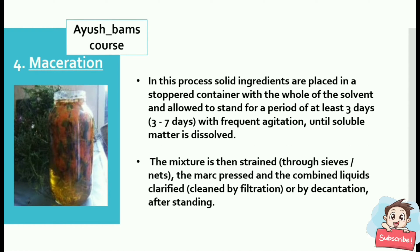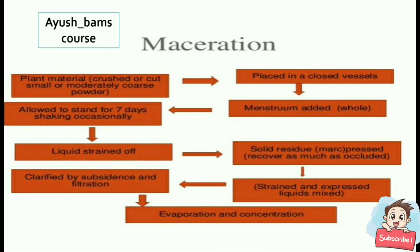The fourth method is maceration. In this process, solid ingredients are placed in a stoppered container with the whole of the solvent and allowed to stand for a period of at least three days with frequent agitation until the soluble matter is dissolved. The mixture is then strained, the marc pressed, and the combined liquids clarified by decantation after standing. The steps involved are: crush or cut the plant material into moderately coarse powder, place it in a closed vessel, add the menstruum, allow to stand for 3–7 days shaking occasionally, strain off all the liquid, press the solid residue (marc), mix the strained and expressed liquid, clarify by subsidence and filtration, then evaporation and concentration.